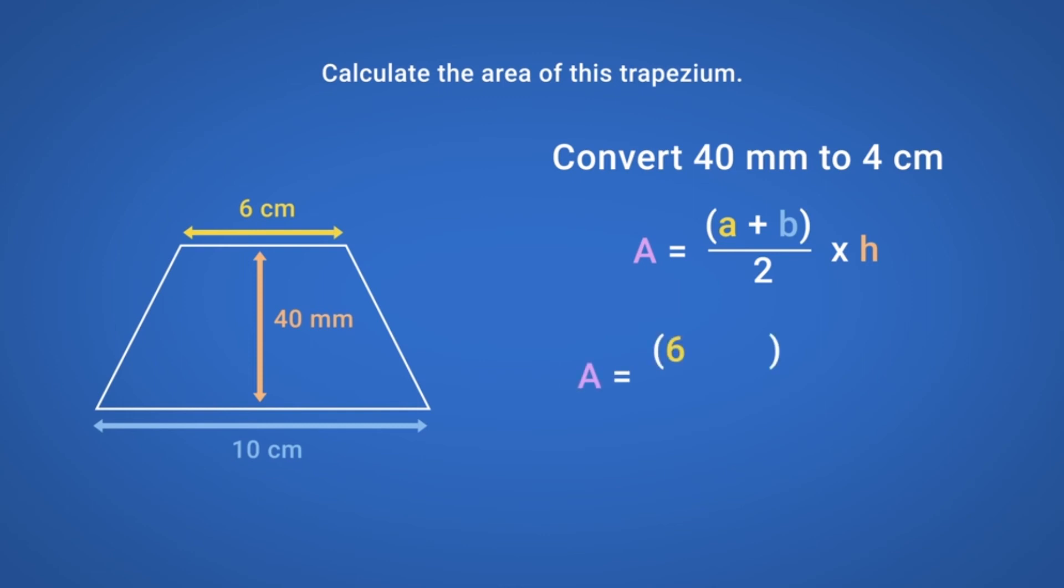A equals (6 plus 10) divided by 2, multiplied by 4, which equals 32. So, the area of this trapezium is 32 cm squared.